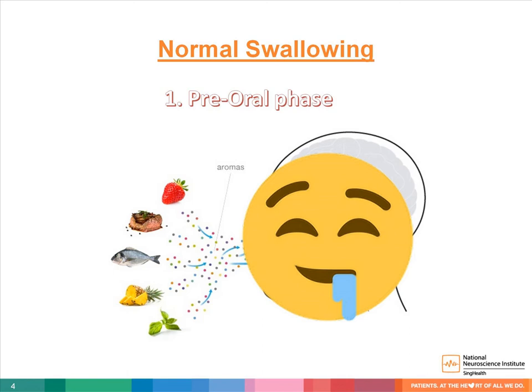Therefore, elements of smell, sight, and cognition are required for the pre-oral phase. You also prepare the position of your mouth and tongue to receive the food.